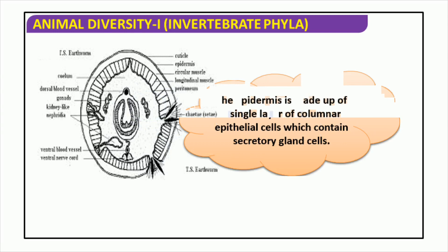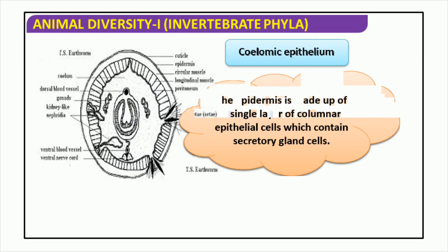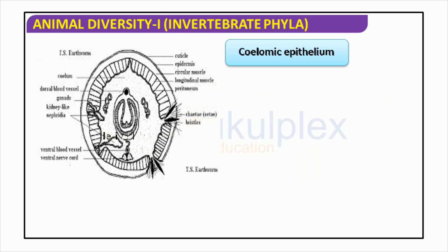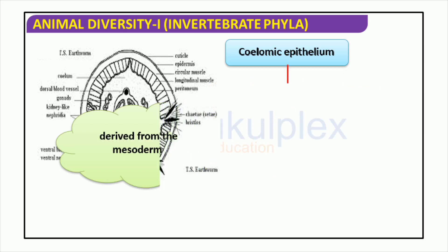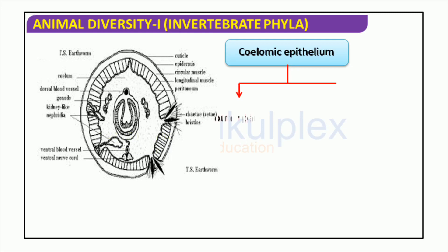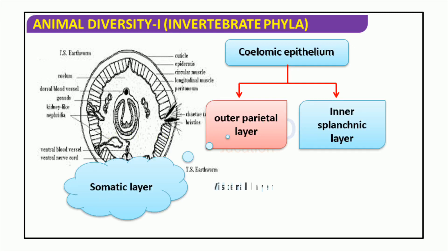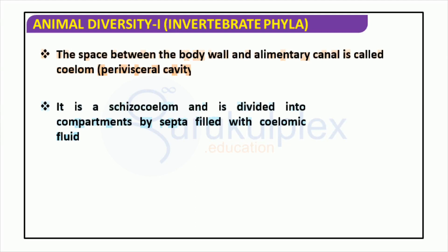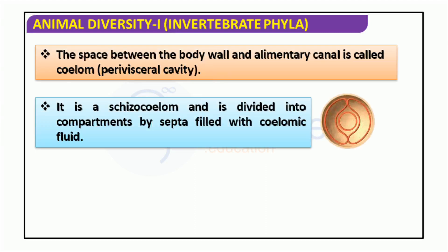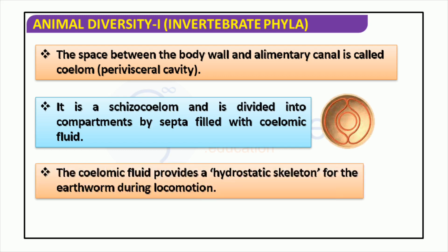Coelomates are one of the most diverse phyla of invertebrates, featuring a body cavity called the coelom which is surrounded by two layers of specialized tissue — namely the outer parietal layer and the inner splanchnic layer. This provides an increased degree of mobility and a more intricate body plan. Additionally, coelomates have three layers of mesoderm-derived tissue: the somatic layer, which is responsible for movement; the visceral layer, which lines the organs; and the epidermis, which is comprised of one layer of columnar epithelial cells with secretory gland cells. The coelom — a cavity between the body wall and digestive tube filled with fluid — creates a hydrostatic skeleton that provides an earthworm with shape and structure.